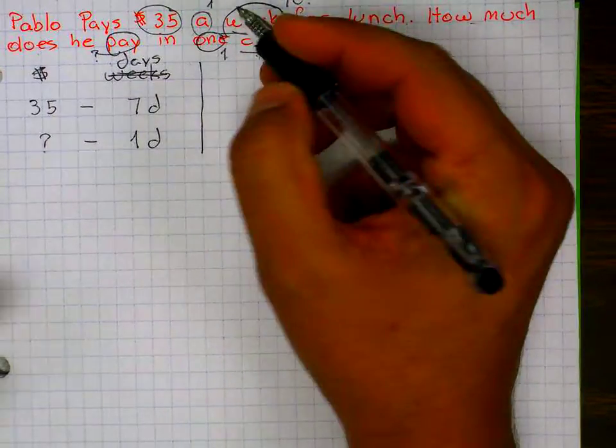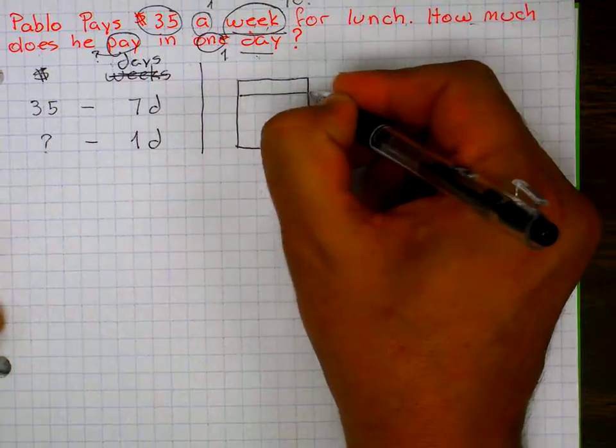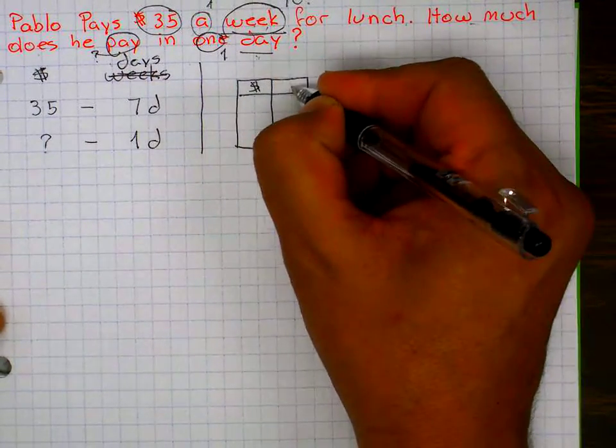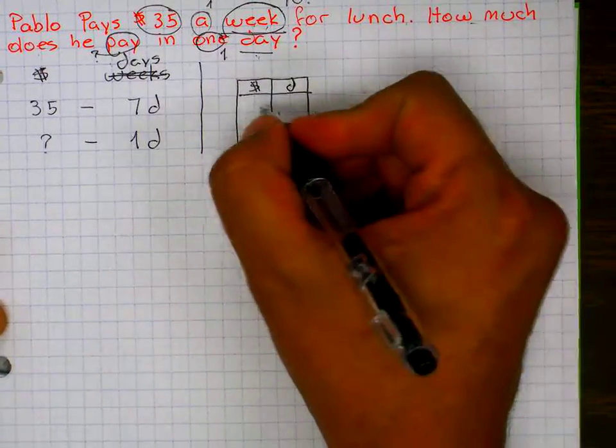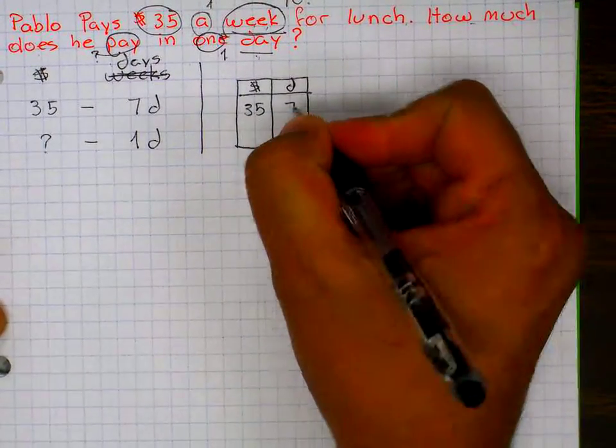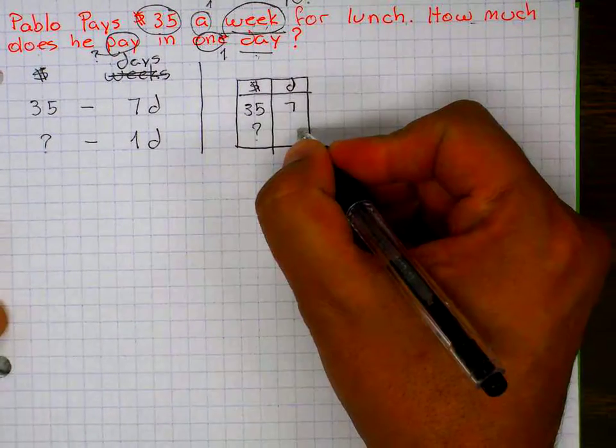So in my table, in my table, I need money and days. I know he pays $35 a week or for seven days. He pays in one day.